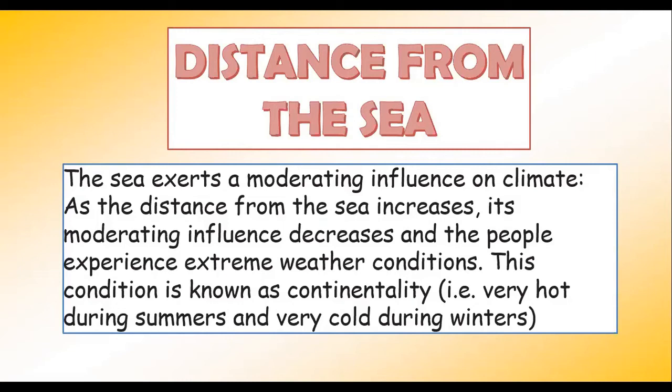As the distance from the sea increases and you move to the interiors, the moderating influence of the sea becomes less, and so the people over there will experience extreme weather conditions. This kind of condition is called continentality — meaning very hot during summers and very cold during winters.